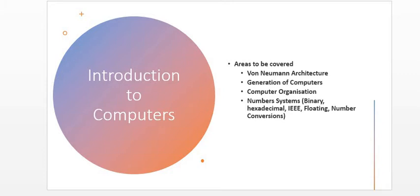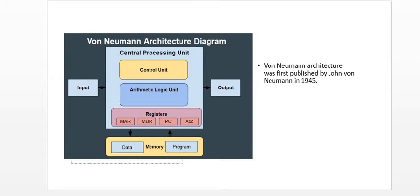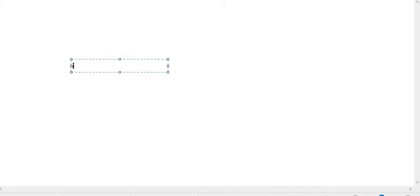Under the topic Introduction to Computers, we are going to cover the following areas. Let's look at the first area: the Von Neumann architecture. I think most of us are familiar with this — it is the block diagram of a computer system, representing the main components that make up or define a computer system. In its simplest form, a computer system is made up of three parts.